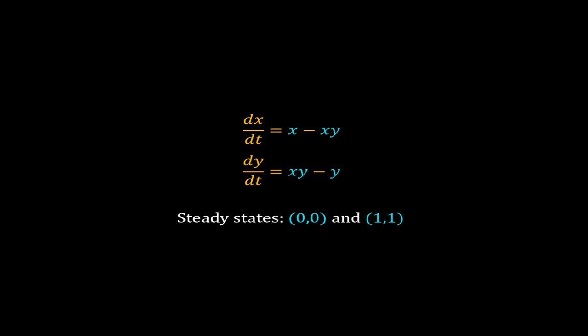Let us take our old predator-prey model as an example. So we have two nonlinear ODEs. dx dt is equal to X minus XY. dy dt is equal to XY minus Y. This system has two steady states. 0, 0 and 1, 1. We will check the stability of these two steady states one by one.